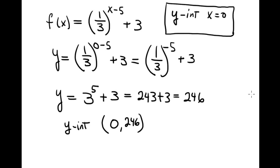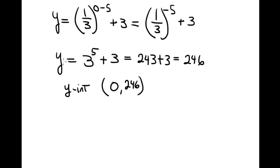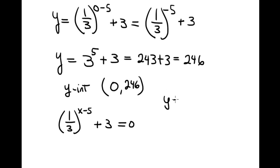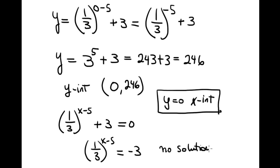For the x-intercept, set y = 0 in (1/3)^(x−5) + 3 = 0, which gives (1/3)^(x−5) = −3. But an exponential function never equals a negative number, so this is a contradiction — there is no x-intercept.